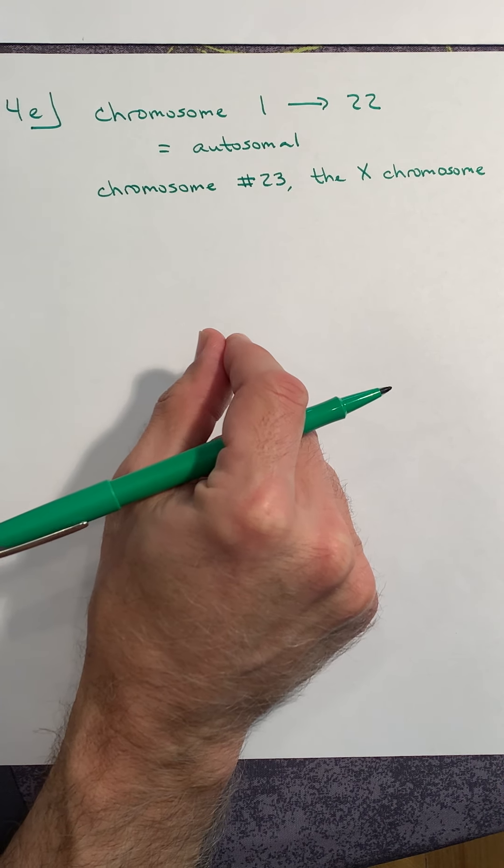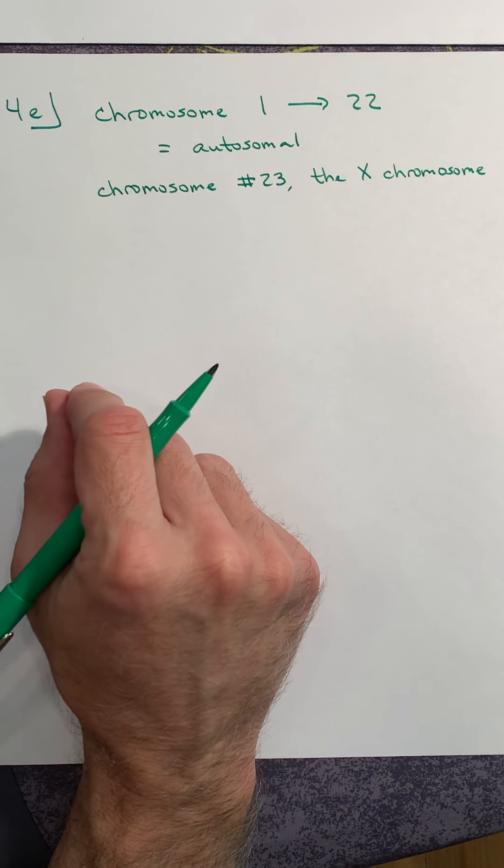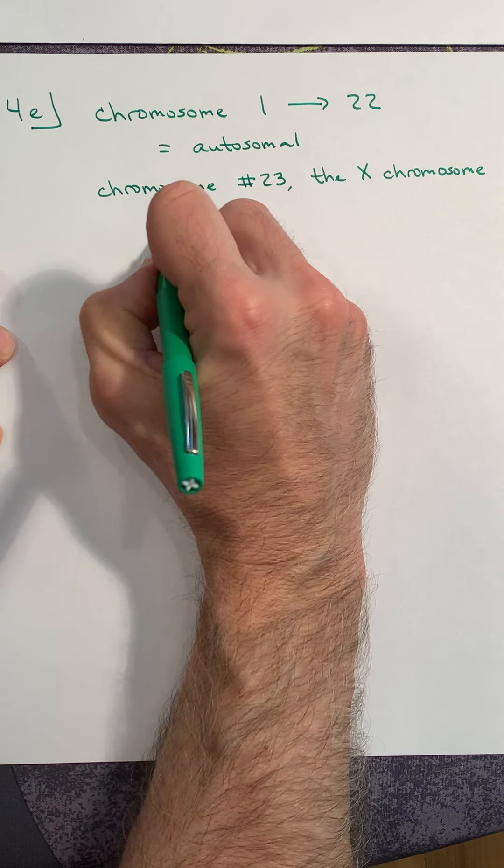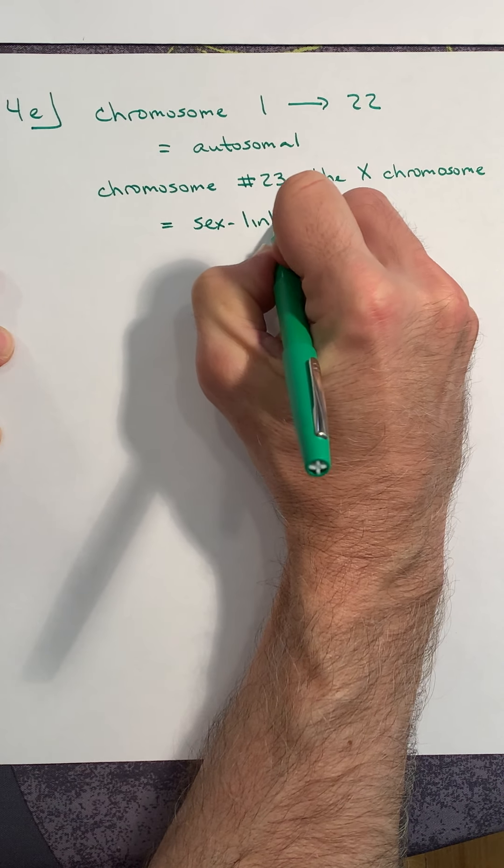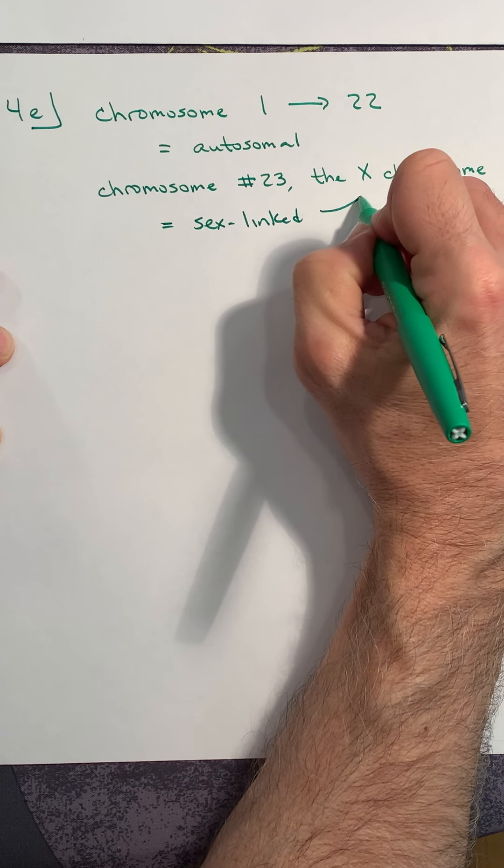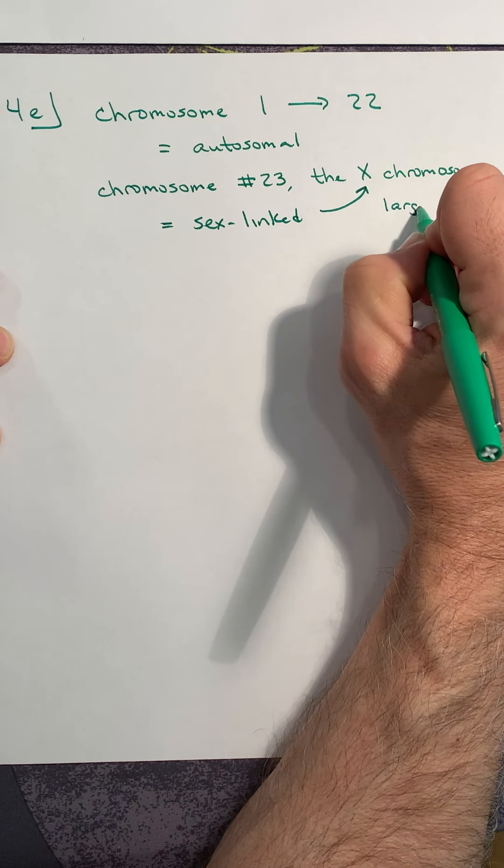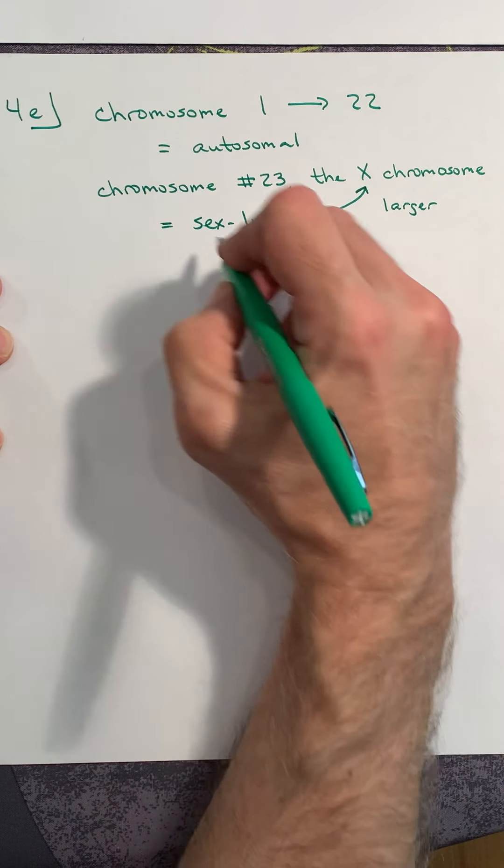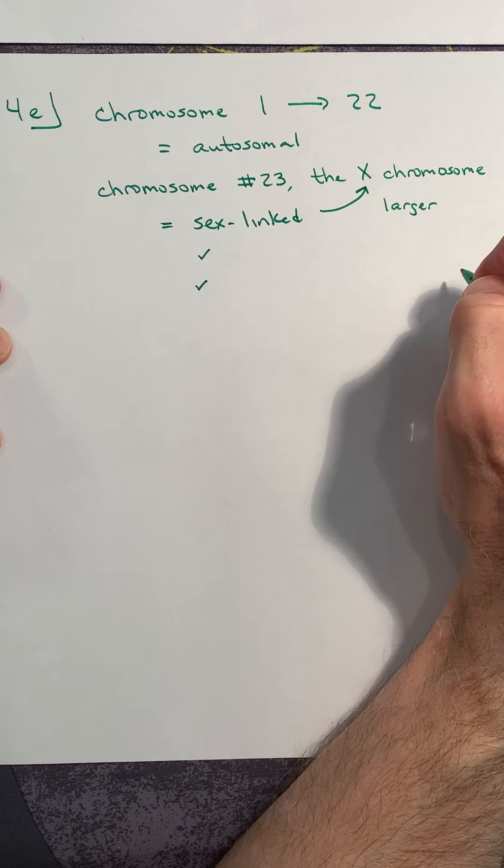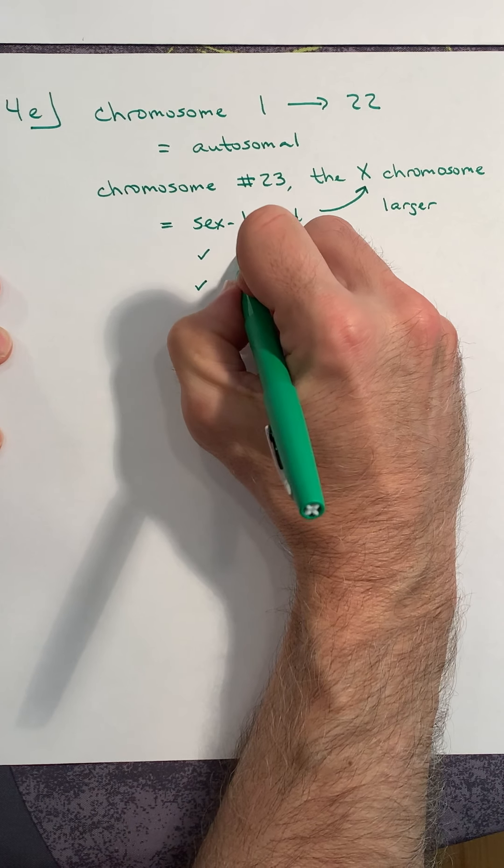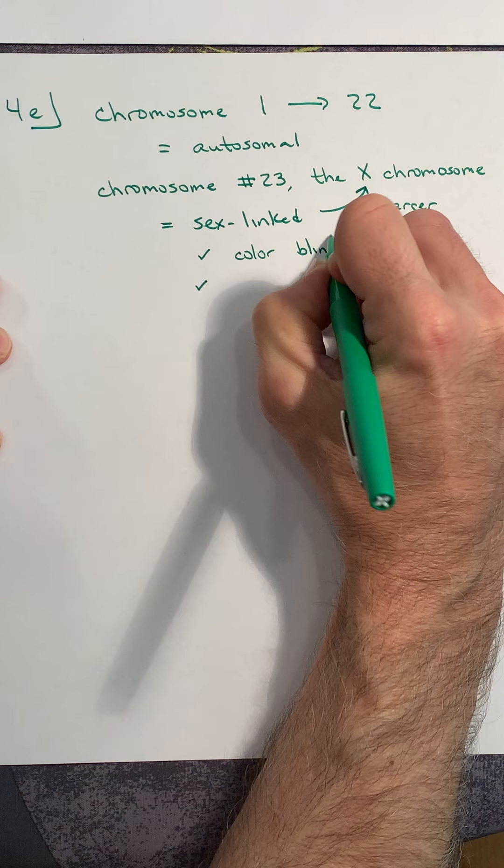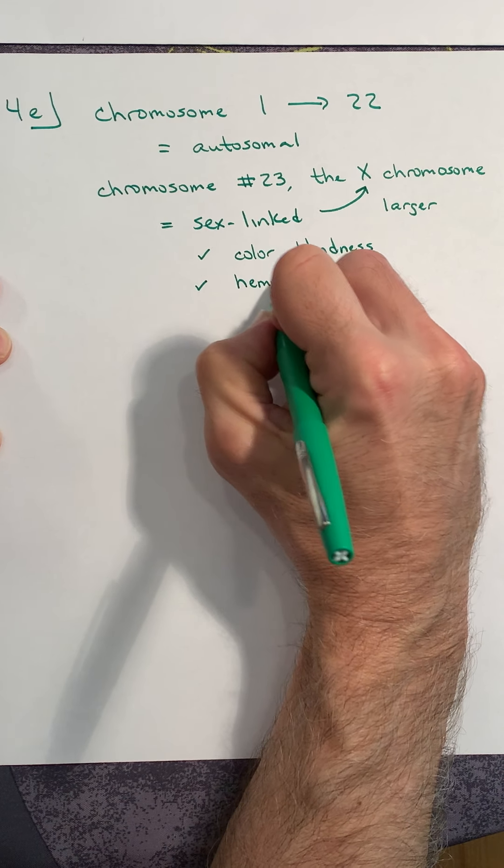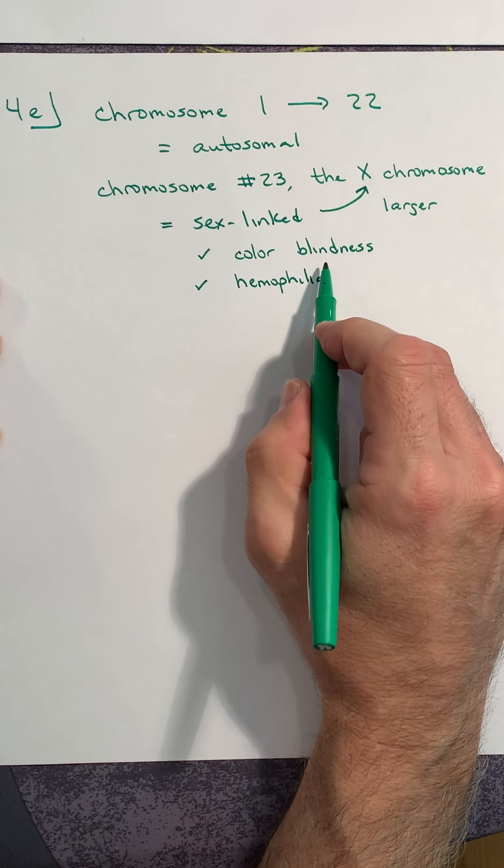We call it the Y because the bottom two chromatids are very thin and tend to stick together, so it appears under the microscope as if it's shaped like a Y. Sex-linked traits are alleles specifically found on the X chromosome, the larger of the two chromosomes in our 23rd pair. There are two examples that everyone always uses and IB uses: color blindness and hemophilia.